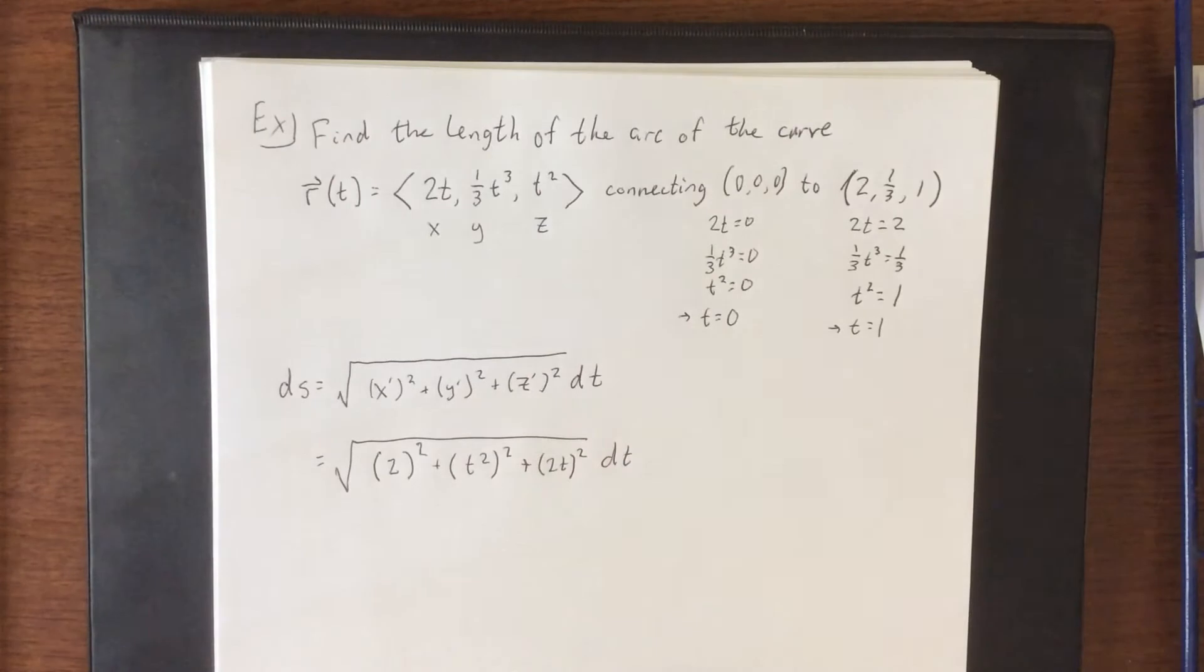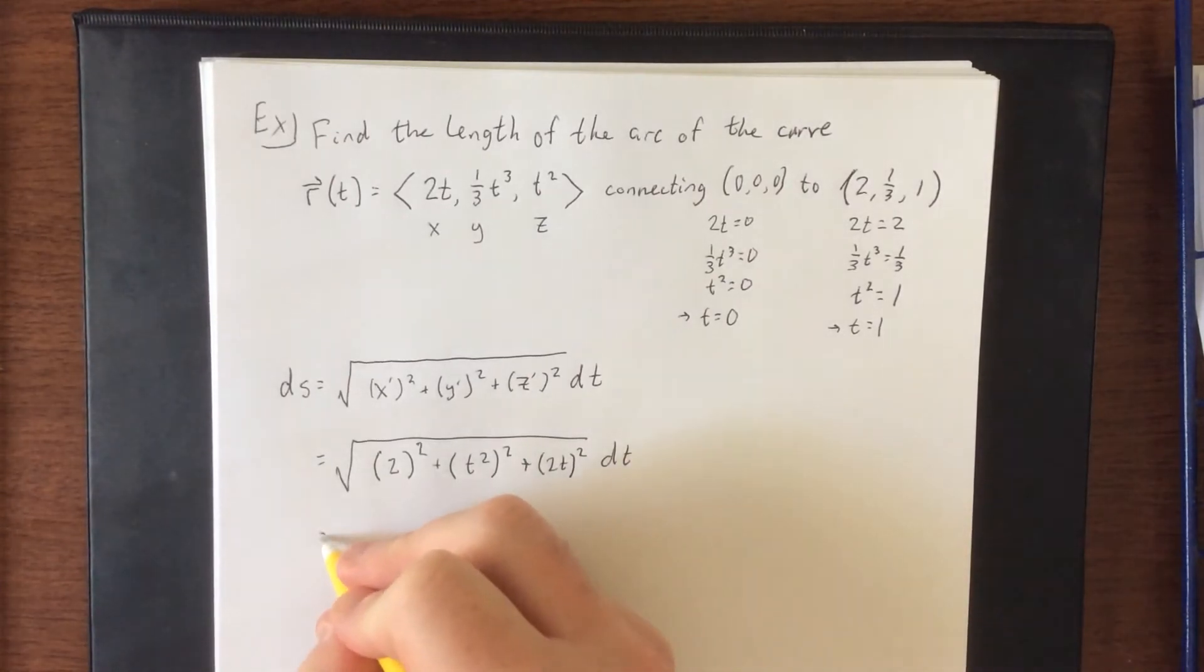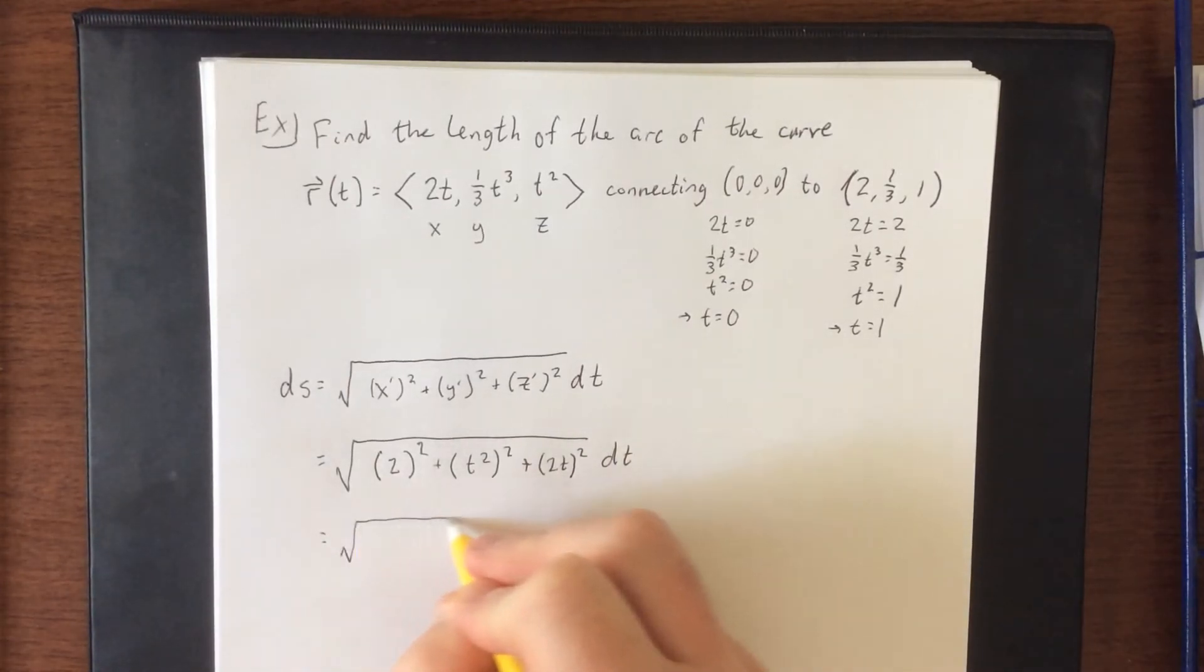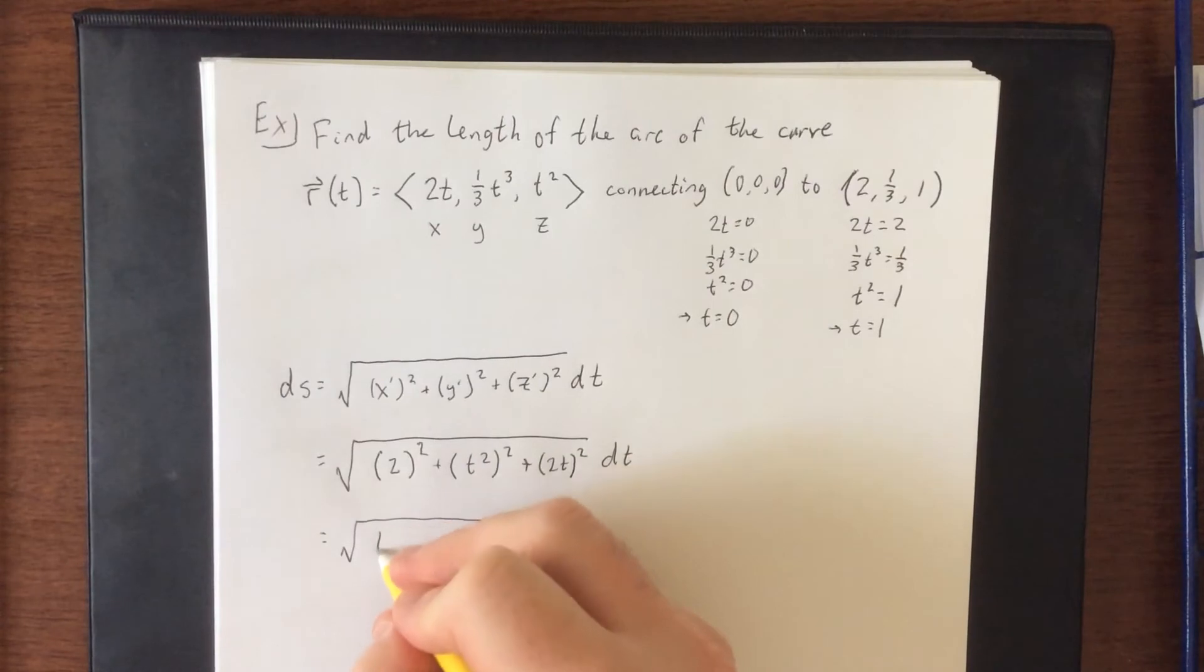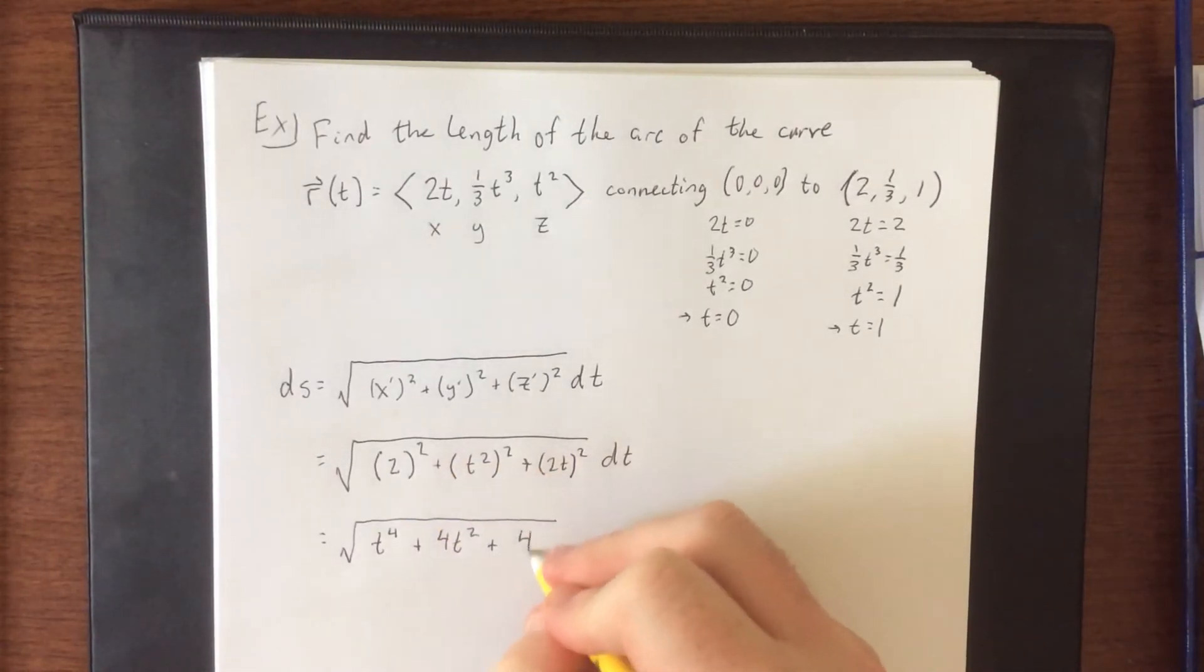Each of those derivatives are going to be squared. I'm actually going to do two things at this step. I'm going to square all of these things and reorder them so that the highest power comes first and the lowest power comes last. This will be t to the fourth plus squaring the 2t, that'll be 4t squared, and squaring the 2 gives me 4.